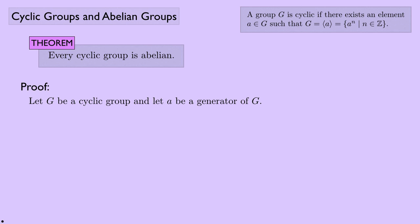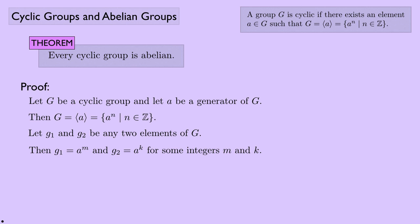Okay, so here is the proof. Let G be a cyclic group and let a be a generator of G. Then G is made up of powers of a, and that's just the definition of what it means to be a cyclic group. And let g1 and g2 be any two elements of G. Well, if g1 and g2 are elements of G, that means I can write them as powers of a. So I'll write g1 as a to the m and g2 as a to the k for some integers m and k. But then when I multiply g1 and g2 together, that's multiplying a to the m times a to the k, which is a to the m plus k. And a to the m plus k is the same thing as a to the k plus m, which is just a to the k times a to the m, and that's g2 times g1. So we can see that G is in fact abelian. So we've seen that every cyclic group is abelian, but not every abelian group is cyclic.